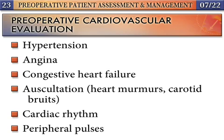Preoperative evaluation of the pulmonary system includes a review of the patient's history and physical findings. Uncontrolled hypertension must be evaluated, and the presence of unstable angina may reflect myocardial ischemia. Detection of the murmur of aortic stenosis is important in the preoperative evaluation.